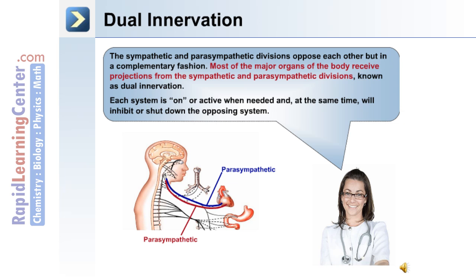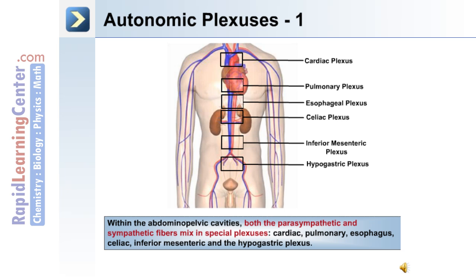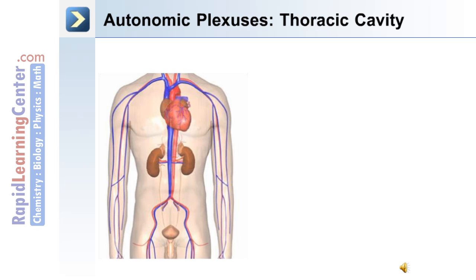The autonomic nervous system contains unique plexuses within the abdominal and pelvic cavities where both parasympathetic and sympathetic fibers mix. These plexuses are the cardiac, pulmonary, esophageal, celiac, inferior mesenteric, and the hypogastric plexuses.